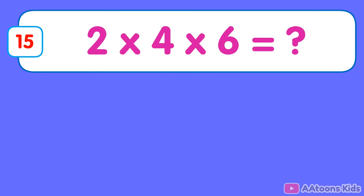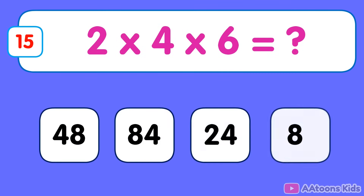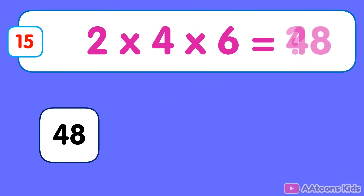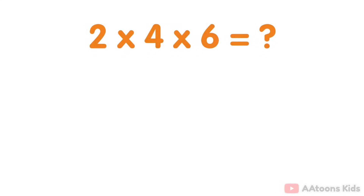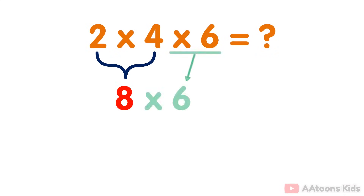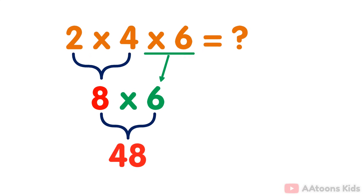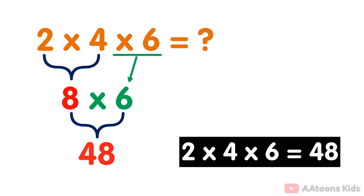2 multiplied by 4 multiplied by 6. The answer is 48. Simply multiply the numbers 2 and 4 which equals 8. Then you multiply the result 8 by 6. You will get 48. Therefore the answer to 2 multiplied by 4 multiplied by 6 is 48.